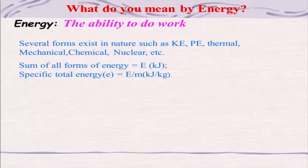The specific total energy is E divided by m, in kilojoules per kg. Energy is basically an extensive property, whereas specific total energy is an intensive property — because it is per unit mass.